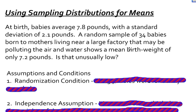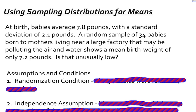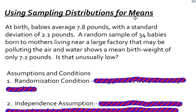In this example, I want to talk about how to use a sampling distribution for means. One of my previous examples talked about using sampling distributions for proportions. So for means, it's very similar, but it's just a little bit different.